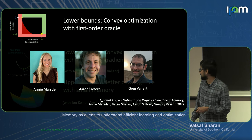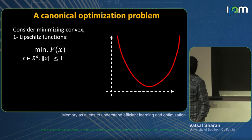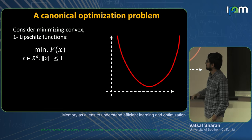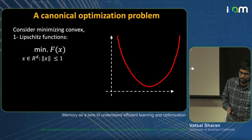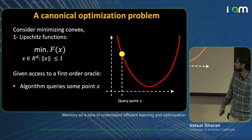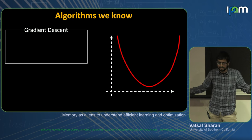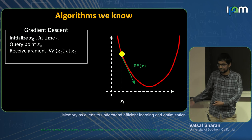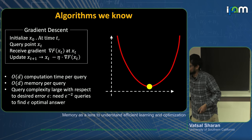This first part is joint work with Annie Marston, Aaron Sidford, and Greg Valiant. This is really the prototypical optimization problem: we want to minimize convex one-Lipschitz functions over the unit ball. The algorithm gets access to a first-order oracle — it can make a query on any point x, and the oracle responds with the function value and gradient at that point. The first algorithm you think of is just doing gradient descent: query a point, take a step in the direction of the negative gradient, keep doing this, and eventually converge. It's by far the most popular algorithm.